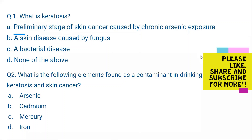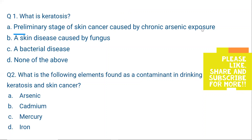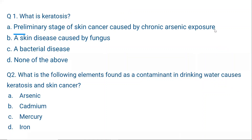First question: What is keratosis? A. Preliminary stage of skin cancer caused by chronic arsenic exposure. B. A skin disease caused by fungus. C. A bacterial disease. D. None of the above. The correct answer is A.